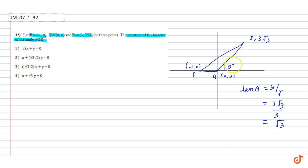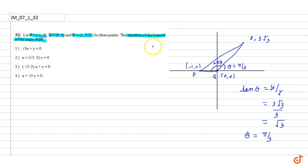Therefore, θ = π/3. Now we have to find the equation of the bisector of angle PQR.